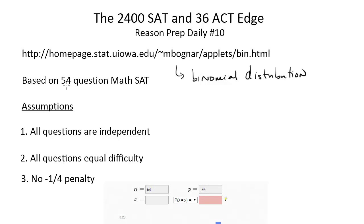So we're basing this on a 54-question math SAT. You could also base this on any other section on the SAT or on the ACT. And there's a few assumptions that we're making here. I'm not a master statistician, so maybe there's some other assumptions and other things that make this a bit more complicated. But we just want a simple model. And the assumptions are, one, all questions are independent.